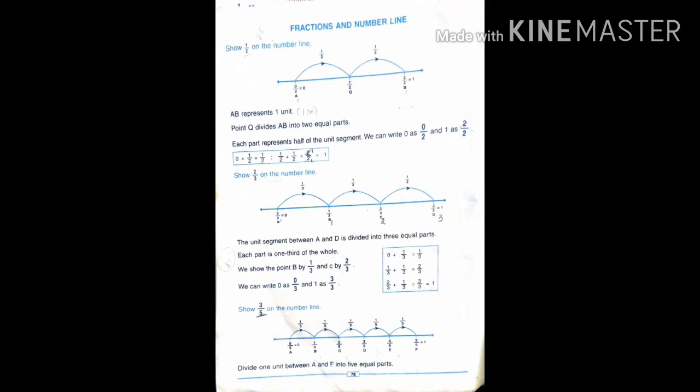So 1 by 2 — numerator 1, denominator 2. Show 1 by 2 on the number line. Draw the number line. First, you will get points A, Q, B.